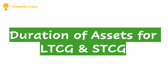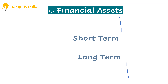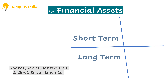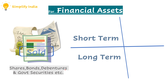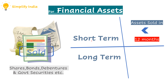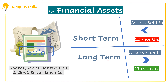Now we are going to learn the duration for different capital assets where the gain arising out of it can be termed as long term capital gain or short term capital gain. However, the tenure varies and it purely depends upon the type of capital asset. In case of financial assets like shares, bonds, debentures, and government securities, if sold within 12 months it is termed a short term capital asset, whereas if sold after 12 months it is termed a long term capital asset.